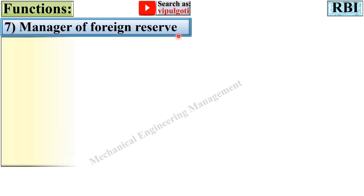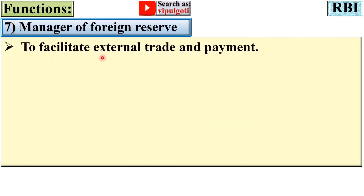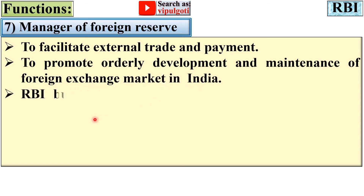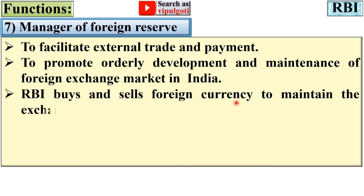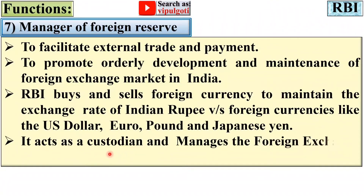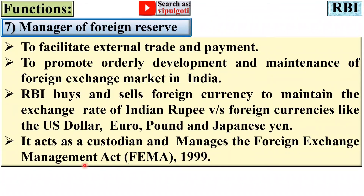The next function is manager of foreign reserve. To facilitate external trade and payment and to promote orderly development and maintenance of the foreign exchange market in India, RBI buys and sells foreign currency to maintain the exchange rate of the Indian rupee versus foreign currencies like the US dollar, euro, pound, and Japanese yen. It acts as custodian and manages the Foreign Exchange Management Act, FEMA, established in 1999.